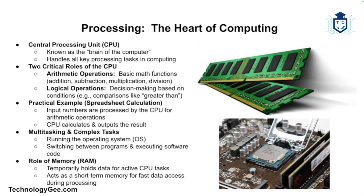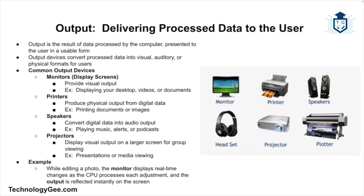A crucial part of this process involves memory, specifically RAM or Random Access Memory. RAM temporarily holds data that the CPU is currently processing — think of it as a short-term memory space for the computer, allowing the CPU to access and process data quickly. After processing is complete, the results are sent to the next stage: output.